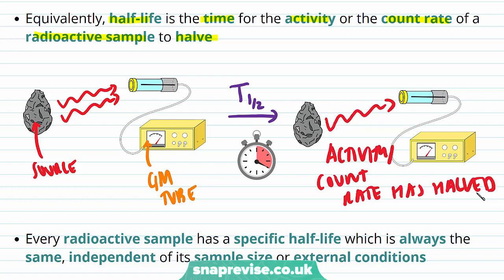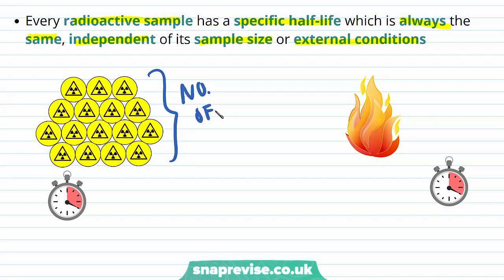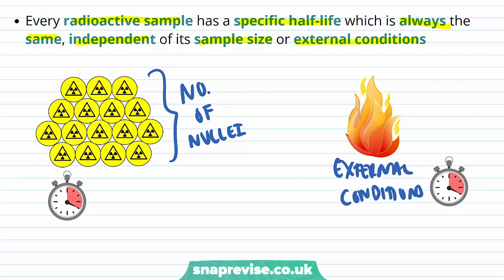This is a way to measure the half-life of a radioactive sample experimentally. Every radioactive sample has a specific half-life which is always the same, independent of its sample size or external conditions. So the half-life is not affected by the number of nuclei, nor by external conditions such as temperature or pressure.